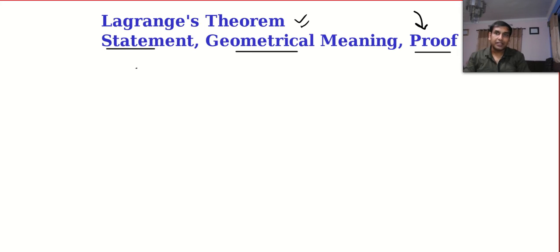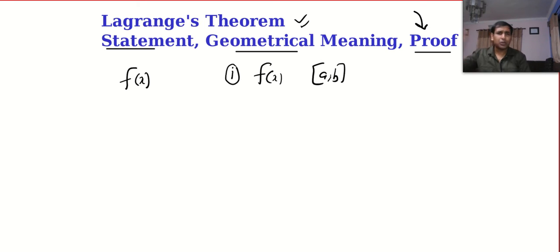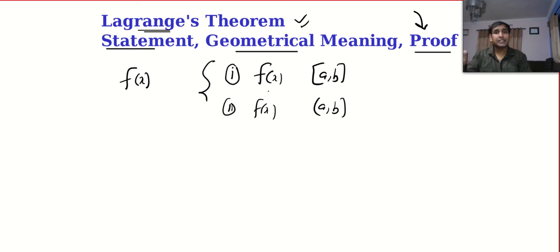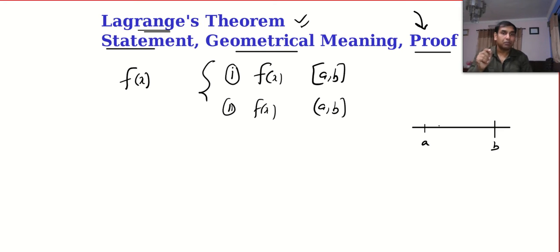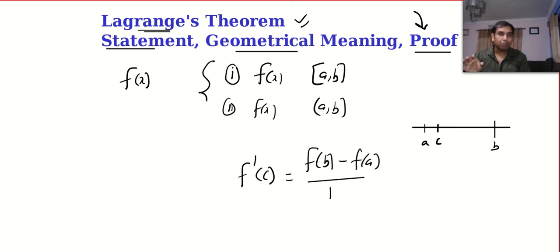The statement goes like this: suppose f(x) is a function which satisfies two conditions. Condition one: f(x) is continuous in the closed interval, just like Rolle's theorem. Second condition: f(x) is differentiable in the open interval. But there is no third condition, and Lagrange claims that if any function satisfies these two conditions, you will be able to find at least one point such that the derivative at that point equals f(b) minus f(a) divided by b minus a.